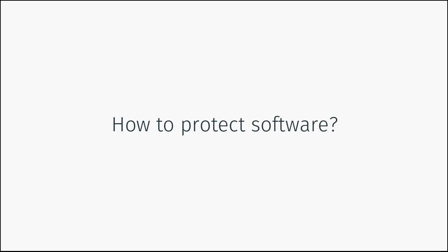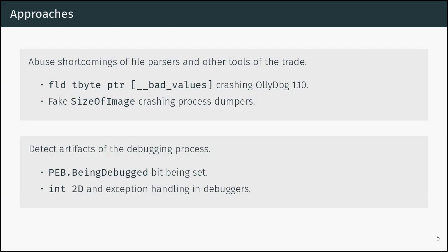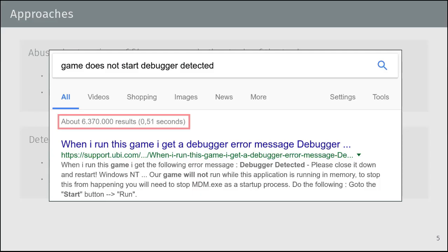How do we protect software? In the early days, we had common tools such as IDA Pro or OllyDbg. They all had well-known bugs, and people started to exploit those bugs such that OllyDbg crashes if you open the binary you want to analyze. Or they introduced debugger checks. However, these countermeasures have some problems — if you Google 'game does not start, debugger detected,' you see this happens quite a lot.